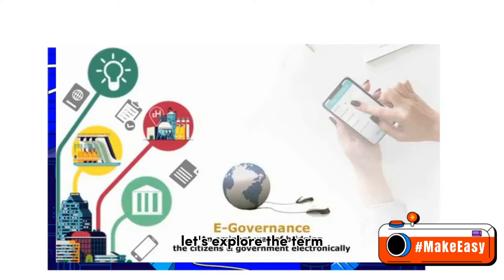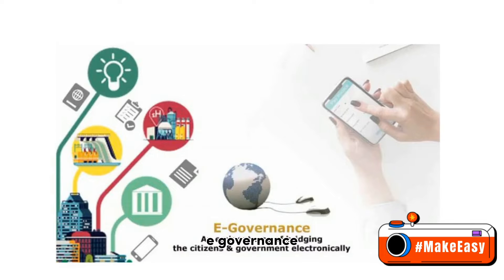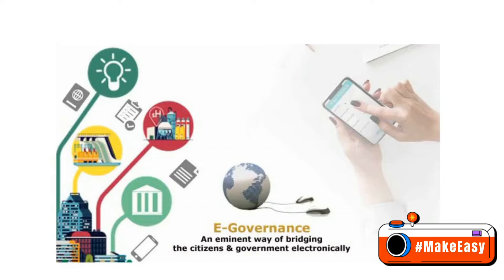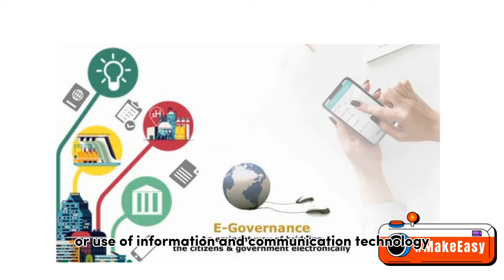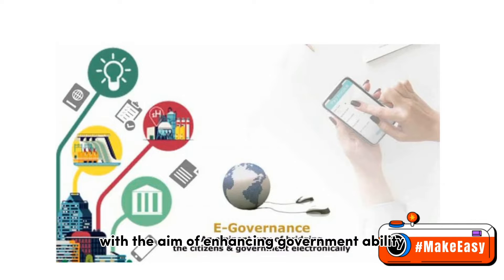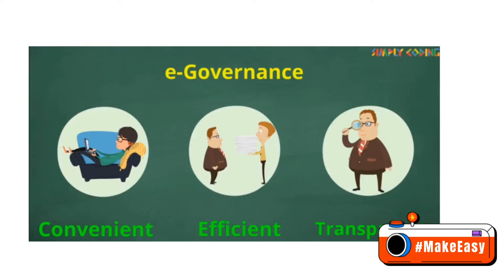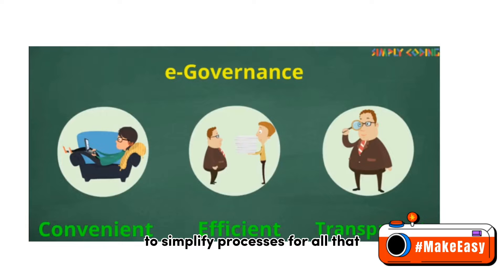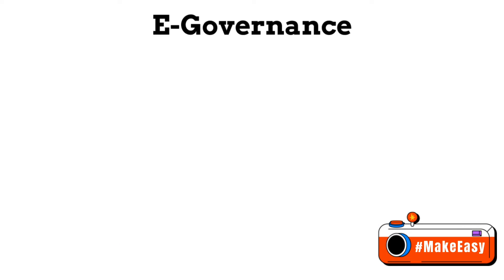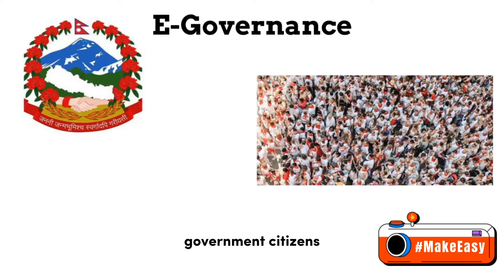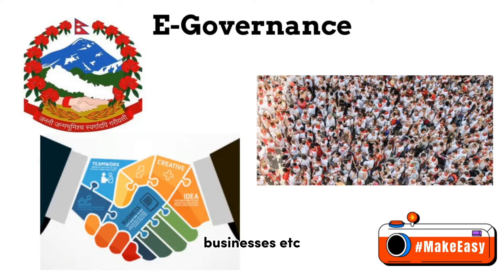Let's explore the term e-governance. E-governance means electronic governance — it is the integration or use of information and communication technology (ICT) in all government processes, with the aim of enhancing the government's ability to address the needs of the general public. The basic purpose of e-governance is to simplify processes for all — that is, government, citizens, businesses, etc.